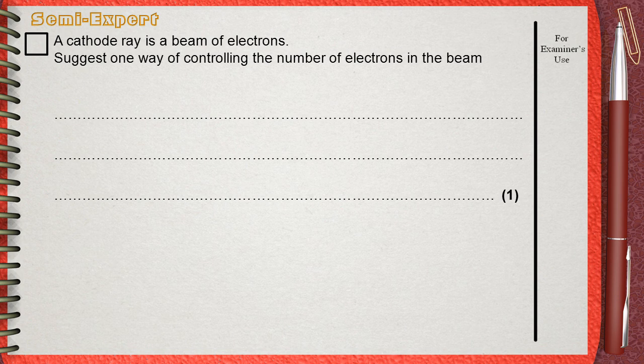A cathode ray is a beam of electrons. Suggest one way of controlling the number of electrons in the beam.